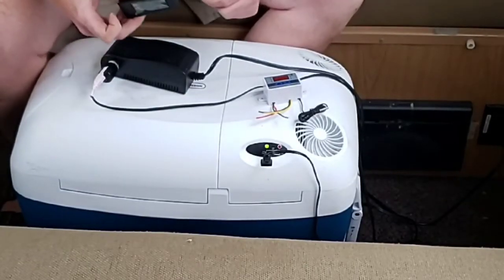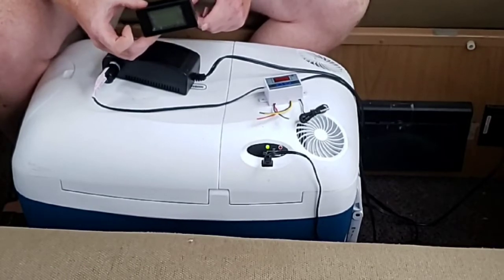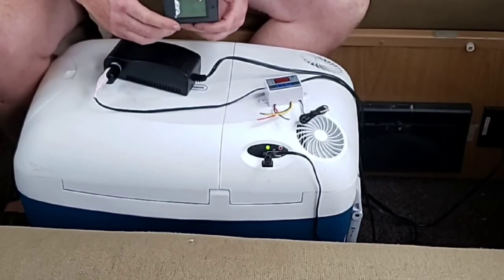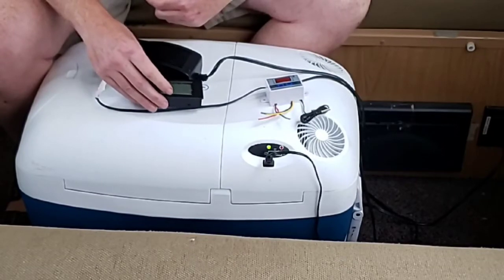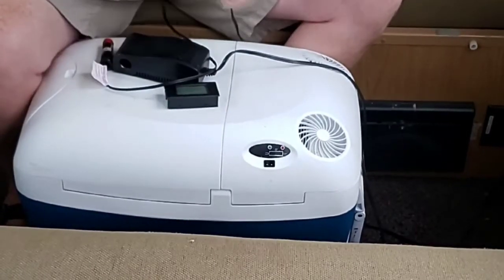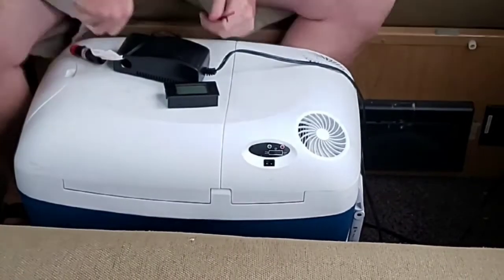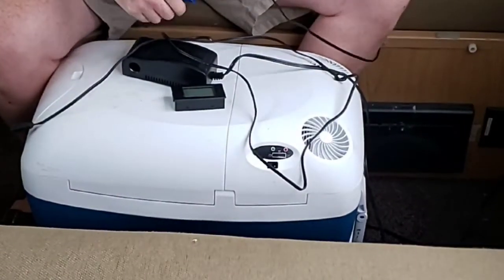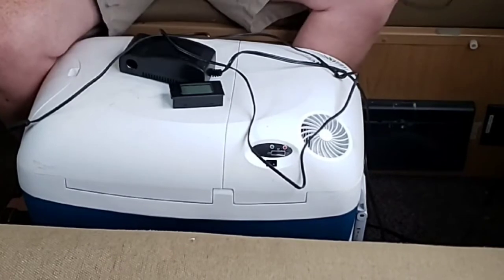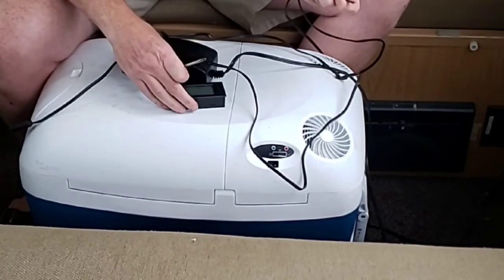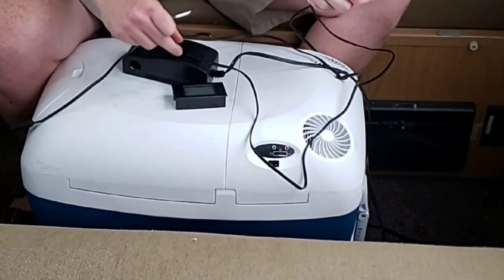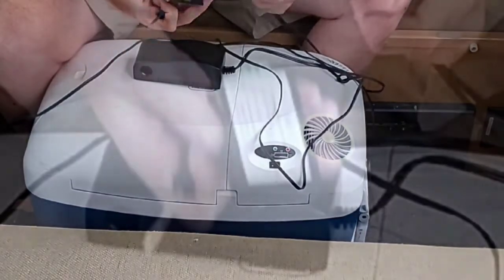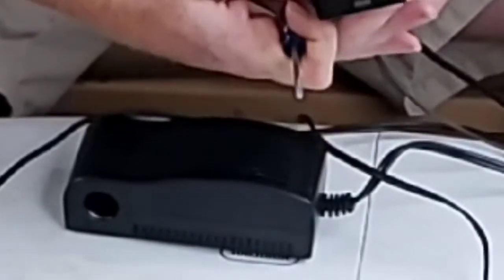So the first thing I'm going to try is I'm just going to put the ammeter in line with the power cord and see if it actually tracks the amount of amperage that's being used. This is the end that's going to be plugged in to either the 12 volt cigarette plug or into the adapter so that's going to feed into the DC in on the ammeter.